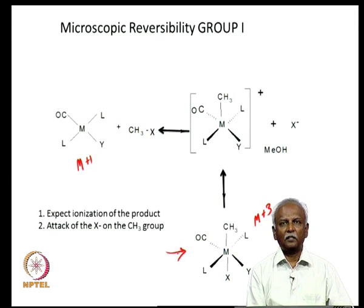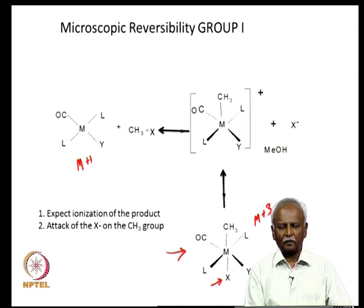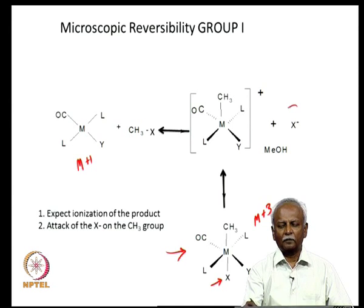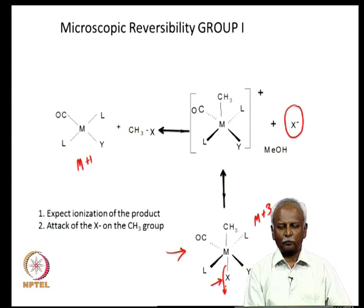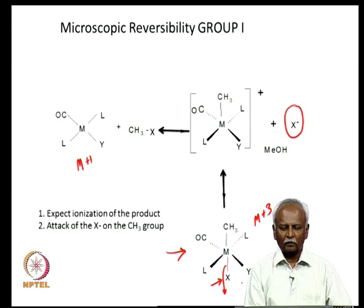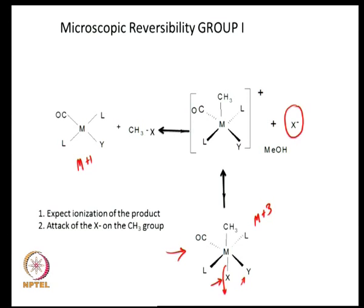We started with a metal in the +1 oxidation state and ended up with a metal in the +3 oxidation state. The product, if it has to lose two groups, can do so in a variety of ways — in a synchronous, concerted fashion. But what happened in the oxidative addition was a stepwise SN2 reaction between CH₃ and X. So in the reverse path, one can imagine loss of X from the coordination sphere of the metal, forming an ionized product: X⁻ is formed and a positively charged metal complex is formed. X has to be a good leaving group. Note that there is a complication — the other group Y can also leave instead.